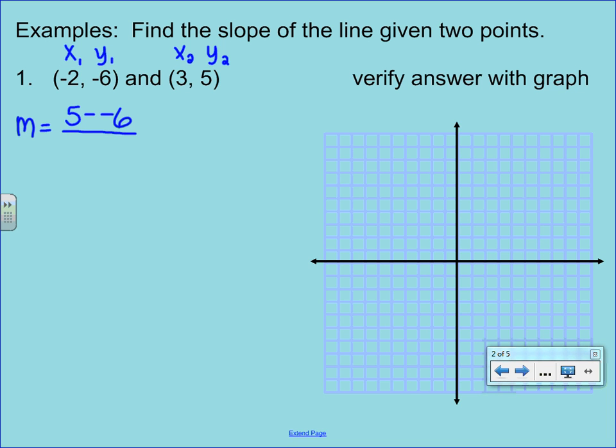On the bottom you're going to have 3 minus a negative 2. Now recall your rules for subtracting when you have a double negative, they do cancel. So minus a negative is the same as adding. So we end up with 5 plus 6 which is 11, and 3 plus 2 which is 5. This is our final answer. I want you to leave it as an improper fraction because that very clearly gives us the rise over the run.